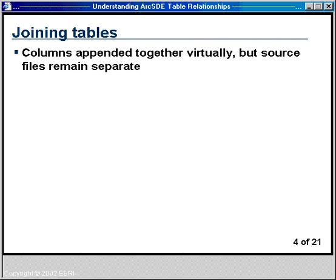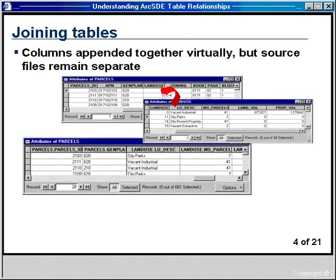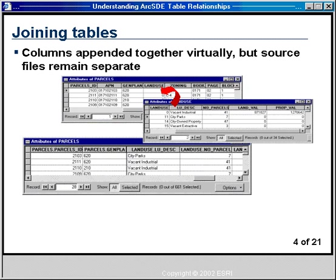The first type of relationship in ArcMap is a join. When tables are joined in ArcMap, all the columns from both tables are virtually appended together into one large table. This does not affect your source data — the tables are not appended in the database, just a temporary association in your ArcMap document. For example, joining a parcels feature class to a land use attribute table on the common land use column produces one large parcels table with all columns from both tables, identified by naming convention like parcels.parcelsID and landuse.LUdesk.